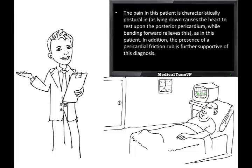The chest pain in this patient is characteristically postural — the patient describes that it worsens with cough and lying down and is relieved upon leaning forward, which is explained by lying down causing the heart to rest upon the posterior pericardium, while bending forward relieves this. In addition, the presence of pericardial friction rub is further suggestive of acute pericarditis. Thus, acute pericarditis is the probable clinical diagnosis.